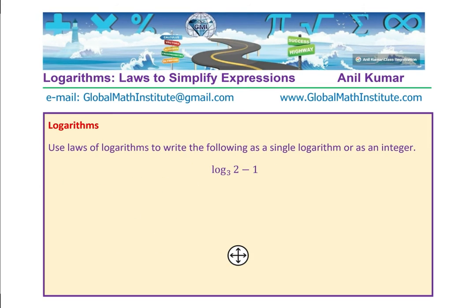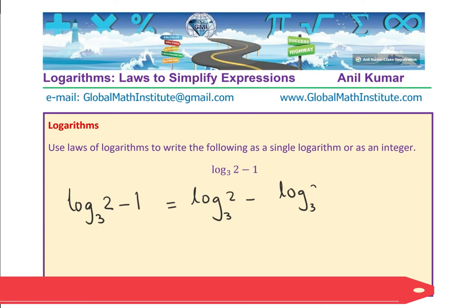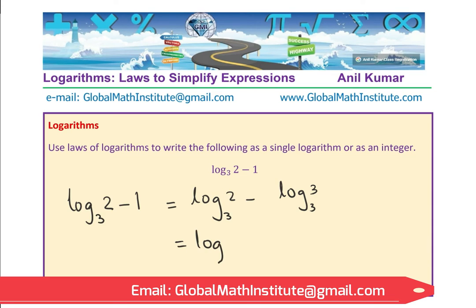Question number 3 — I find these questions slightly tricky. Many students get stuck on this kind. The question is log base 3 of 2 minus 1. How do I combine minus 1 with this? I cannot divide 2 by 1. What I can do is write 1 in logarithm form: log base 3 of 3 equals 1. Now we have the same base, so we divide: log base 3 of 2 by 3. We have written this as a single logarithm.